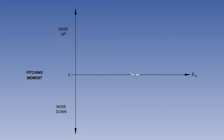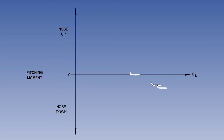An aeroplane in equilibrium is shown on the horizontal axis — it is not generating a nose-up or nose-down pitching moment. An upward acting gust has increased the lift coefficient, and because the aircraft has some longitudinal static stability, it will generate a nose-down pitching moment. The nose-down pitching moment will start the aircraft back towards equilibrium. Remember, longitudinal static stability is just the initial reaction to a change in angle of attack.